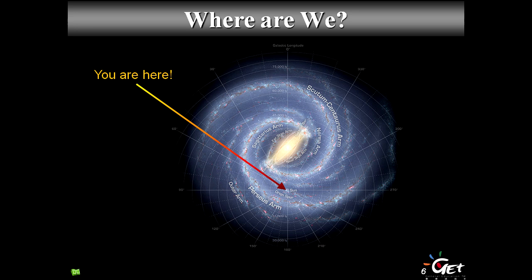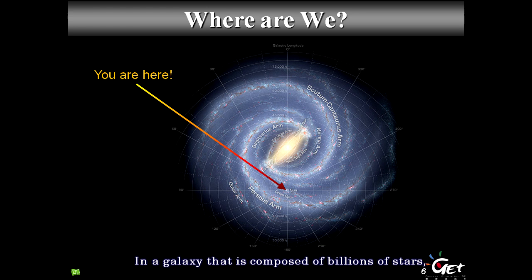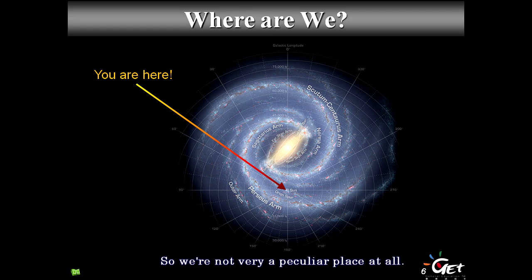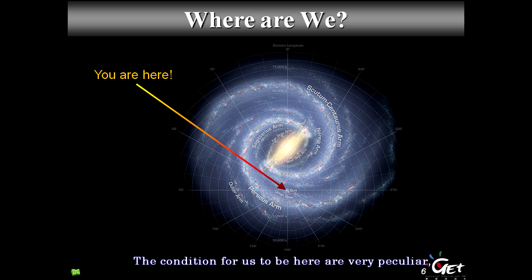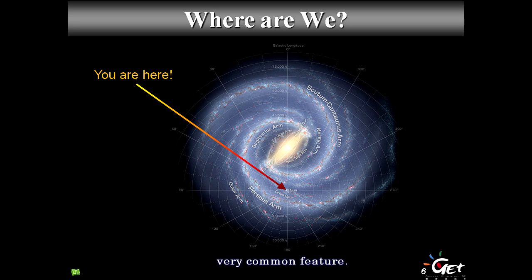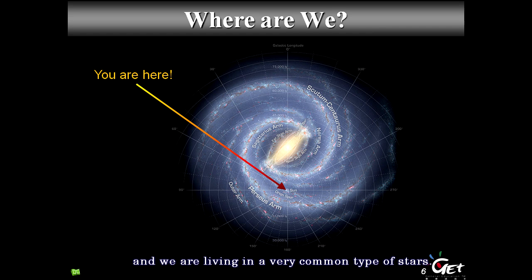The Sun is located roughly here in the galaxy. The center of the galaxy is over there, and the Sun is at this position. Remember: the Sun is a star in a galaxy composed of billions of stars very similar to the Sun, and there are billions of galaxies outside. We're not in a peculiar place at all — it's a very common type of galaxy and we live around a very common type of star.